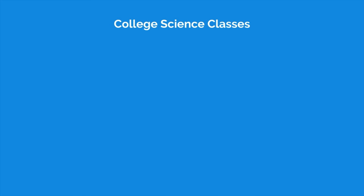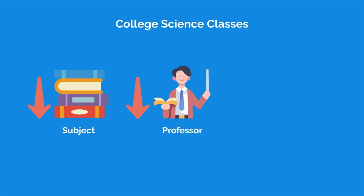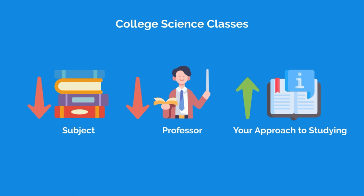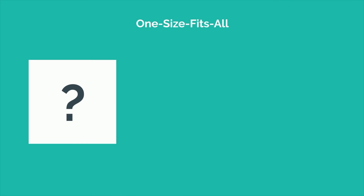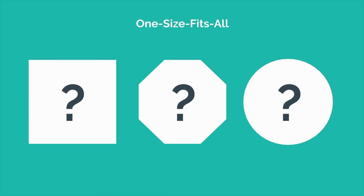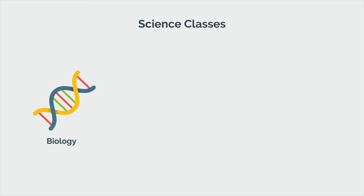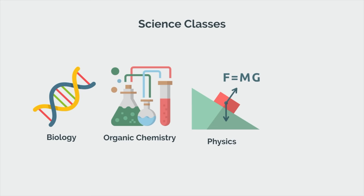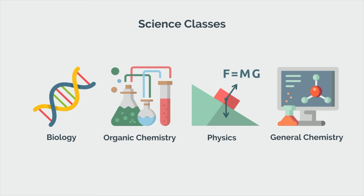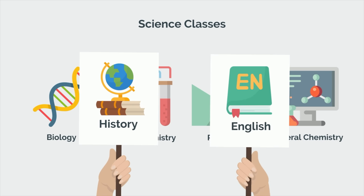How well you do in your college science classes has less to do with the subject matter or how mean your professor is, and more to do with how you're approaching the content. There's no one-size-fits-all solution to studying that will work for every single class. The way that you approach science classes like biology, organic chemistry, physics, and general chemistry is totally different from how you would approach classes like history or English.